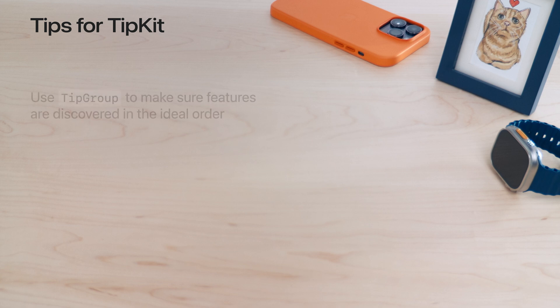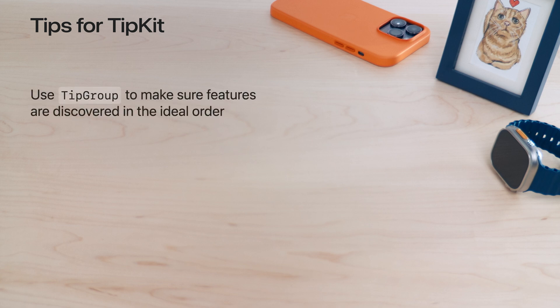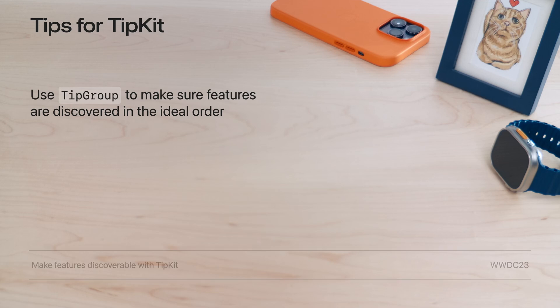TipKit has powerful tools to ensure your app's tips are only shown at the perfect time and to the audience that will find them most useful. Use TipGroup to allow your features to be discovered one at a time and in the ideal order. TipGroups work great alongside display rules and display frequency for customizing feature discovery in your app. And to learn more about creating display rules, check out last year's WWDC video, Make Features Discoverable with TipKit.